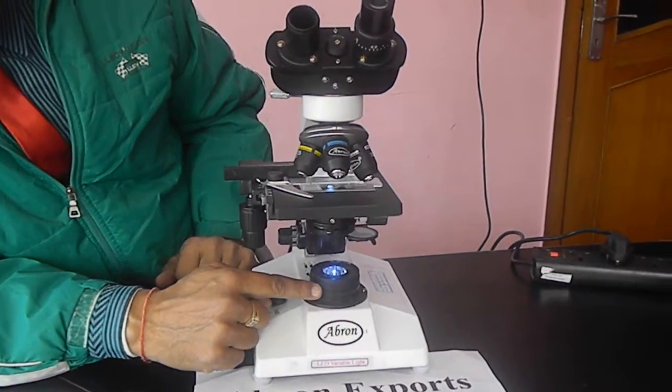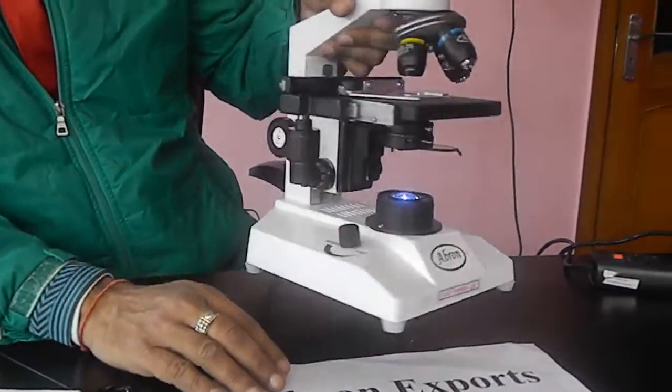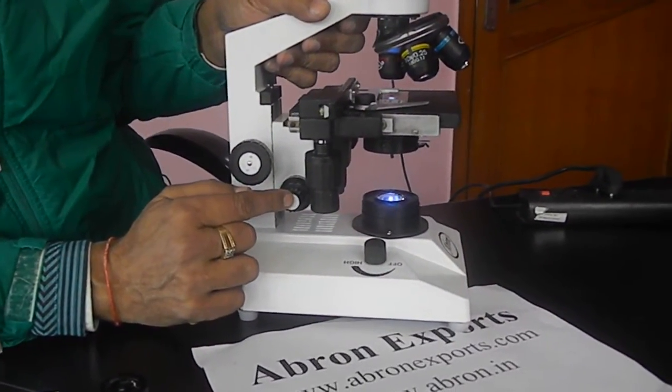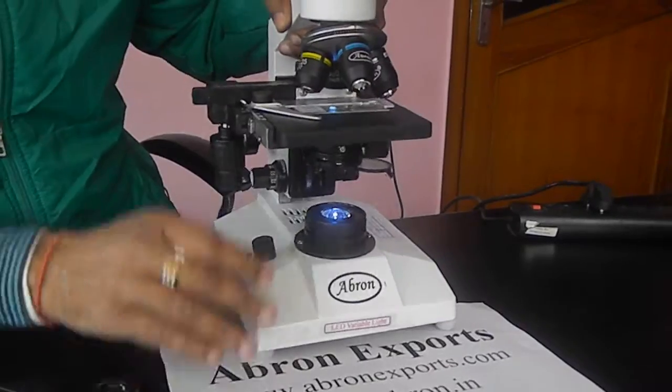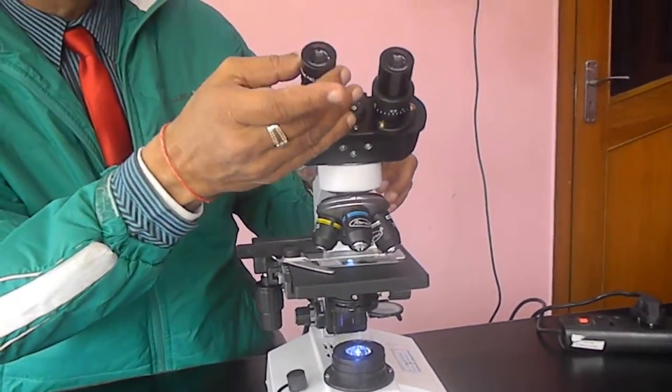Then there is condenser light given here and there is one focusing knob. This is coarse focusing, this is fine focusing. And there are two eyepieces, wide field eyepieces to be placed inside.